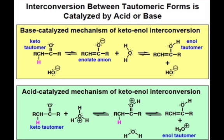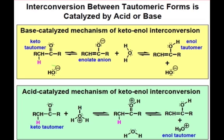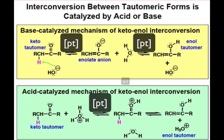Tautomerization of the keto form to the enol form can be catalyzed by either base or acid. Both mechanisms involve two reversible proton transfer steps.